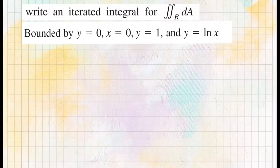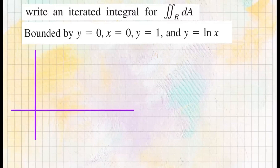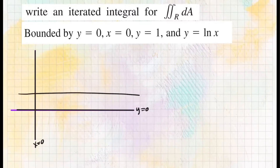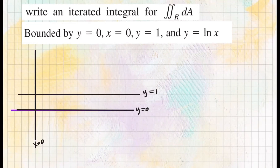Here's another example — we're going to set up a double integral bounded by the curves y equals zero, x equals zero, y equals one, and y equals ln of x. Let's sketch the region. y equals zero is the x-axis, x equals zero is the y-axis. y equals one is a horizontal line. The curve y equals ln of x starts at x equals one (the x-intercept) and increases. The region bounded by all these curves is our domain of integration.